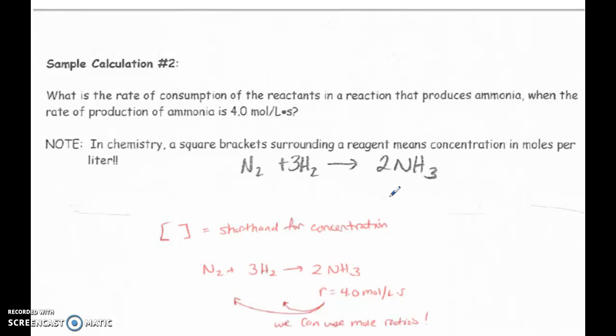So here's our second example. So this is where you now, let's say you have the rate of a reaction for one component. You can now use mole ratios to determine the concentration of the other components. So what is the rate of consumption of the reactants in a reaction that produces ammonia when the rate of production for ammonia is 4 moles per liter per second?